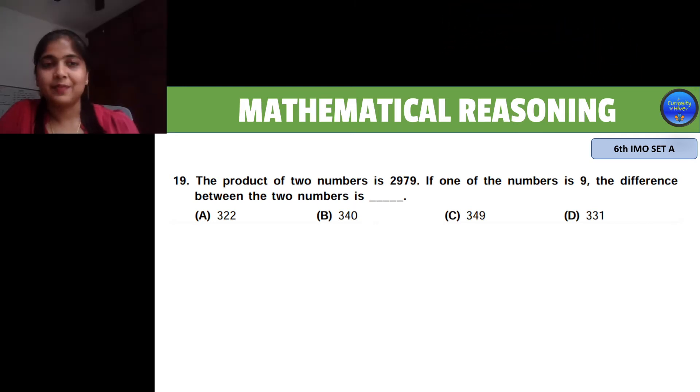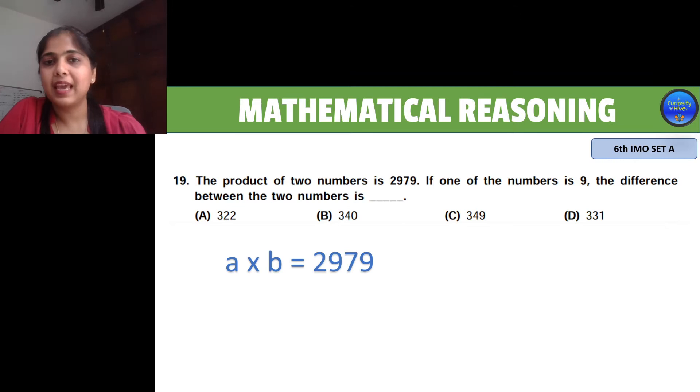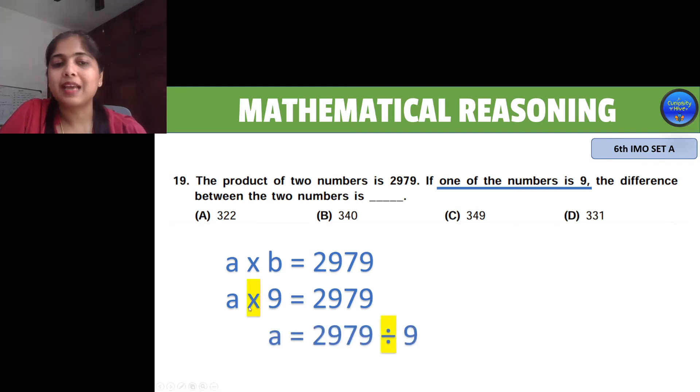The product of two numbers is 2979. Let's call these numbers A and B. So A times B is 2979, of which one of the numbers is 9. So A times 9 is 2979. In order to find A, we should move this 9 to the other side, and when it moves, the sign changes from multiplication to division.